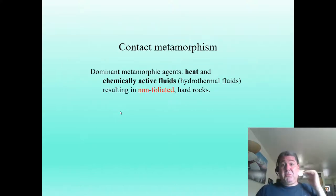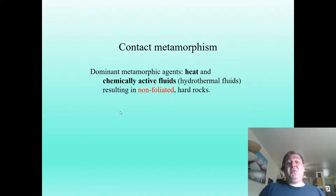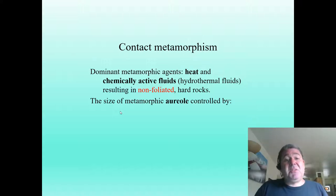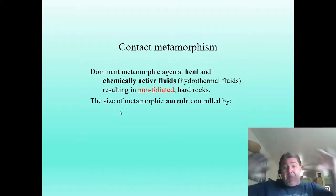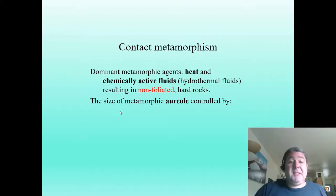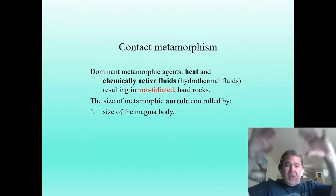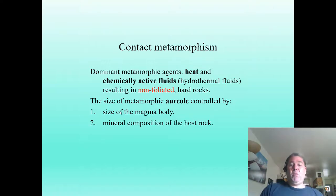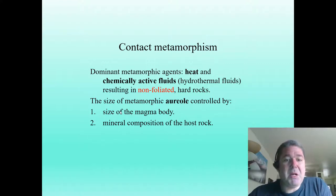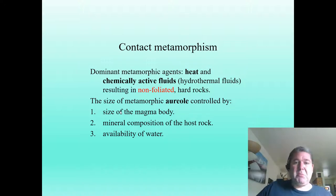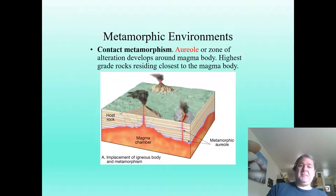Let's look first at contact metamorphism. The dominant agents are heat and those chemically active fluids. This is going to result in non-foliated metamorphic rocks — hard rocks. The size of the zone of metamorphism, known as an aureole, is going to be controlled by the size of the magma body. The bigger the magma body, the more heat, and the larger the aureole. Also important are what the host rock is made of and the availability of water.